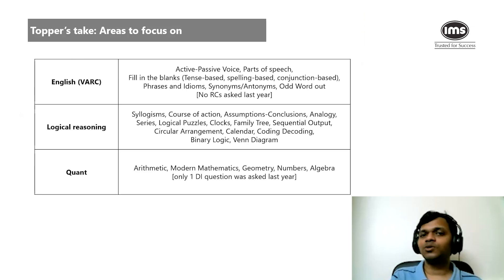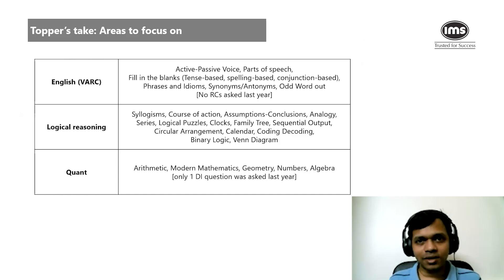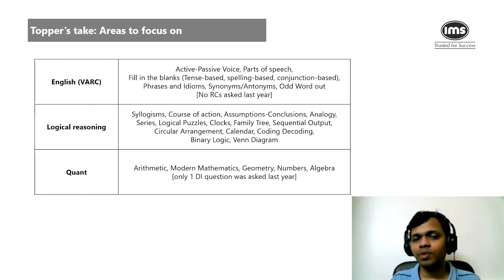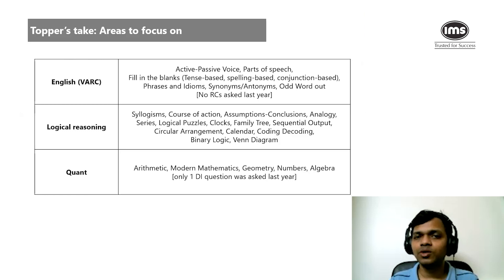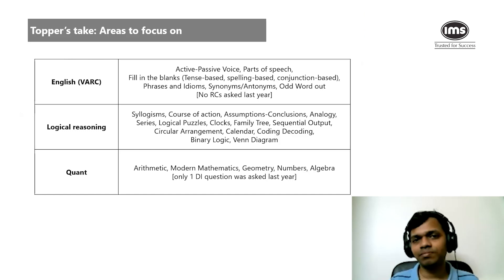Now let's understand what areas to focus on. In English, though it was supposed to be VRC, there was no RC last year — this year they may or may not ask it. What was asked was largely grammar and vocabulary: active-passive voice, parts of speech, fill in the blanks, phrases and idioms, synonyms, antonyms, odd one out. These questions shouldn't take more than 30 to 45 seconds each. The focus should be doing as many questions as you can correctly in very little time — ideally completing English within 10 to 12 minutes.